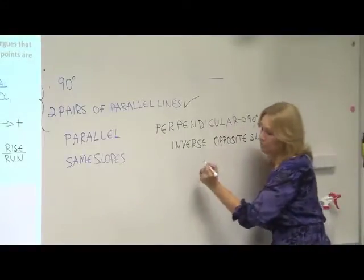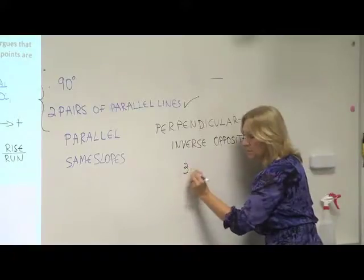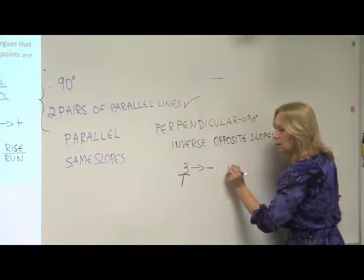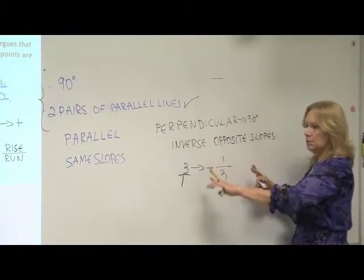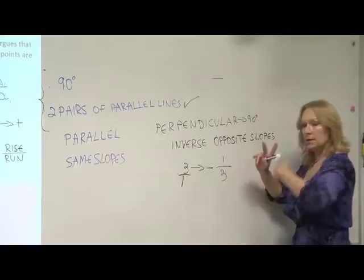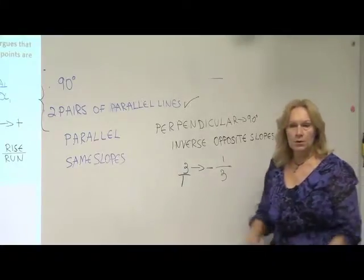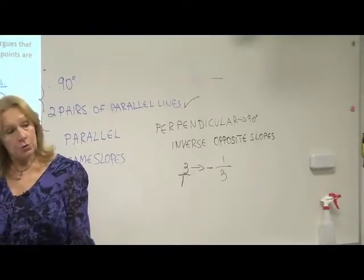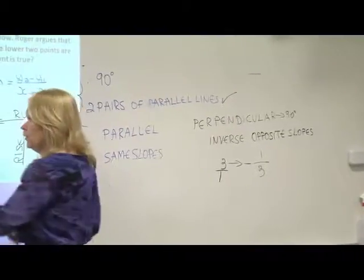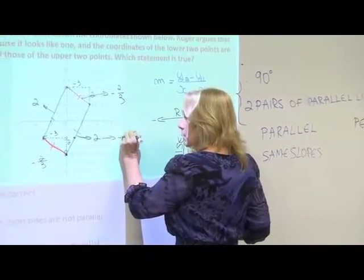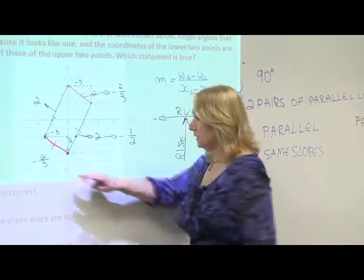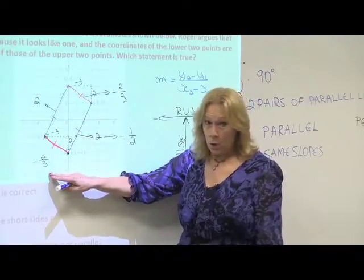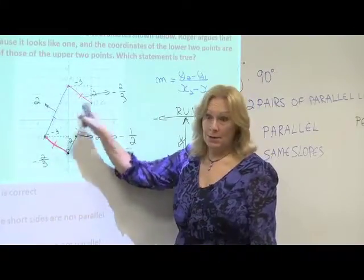So if the slope of one is three, for instance, the slope of the other one, if it's positive, negative, it's three over one, one over three. So they have different signs and inverse numerator with denominator. What's the inverse of two-thirds? Would be minus one-half. Well, this is not minus one-half. So these are not 90 degrees.